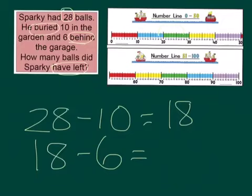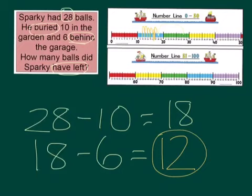Let's use the number line and count back six. So starting on 18, one, two, three, four, five, six. He landed on, we landed on 12. So how many balls did Sparky have left? He had 12 balls left. That's our answer.